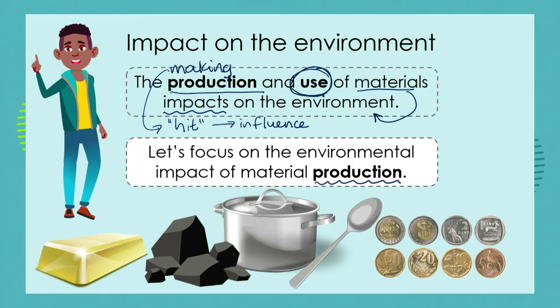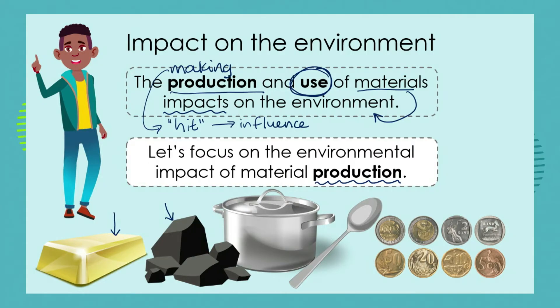We know that certain materials are in the raw material state in the ground, such as gold and coal. We extract metals and other substances from the earth and we convert them, change them, combine them, and heat them — all sorts of things — in order to produce products that we need. In producing these products, very often the actual production processes can harm the environment.